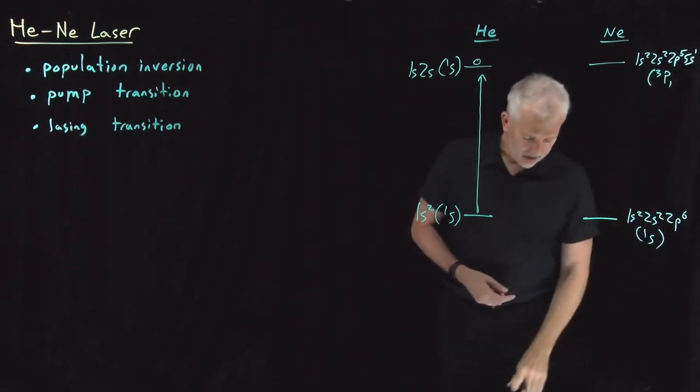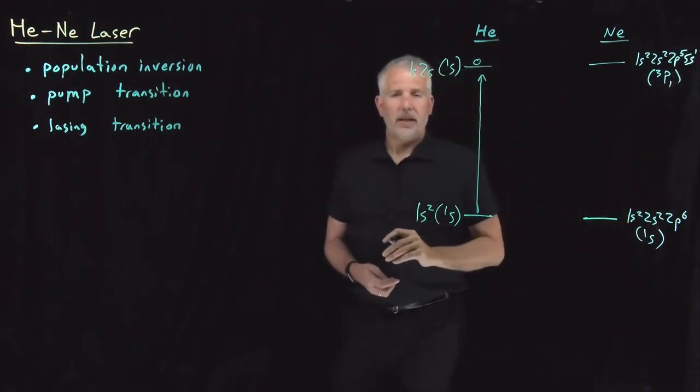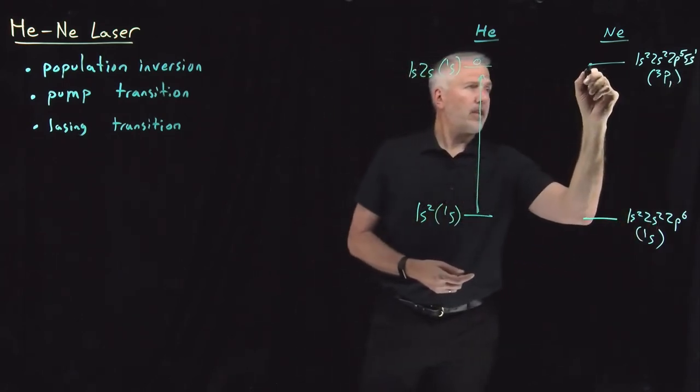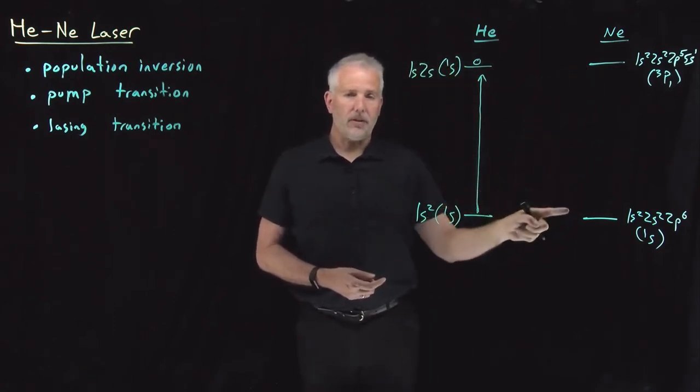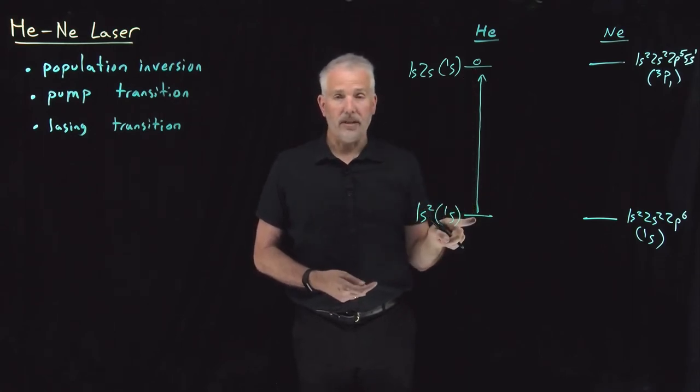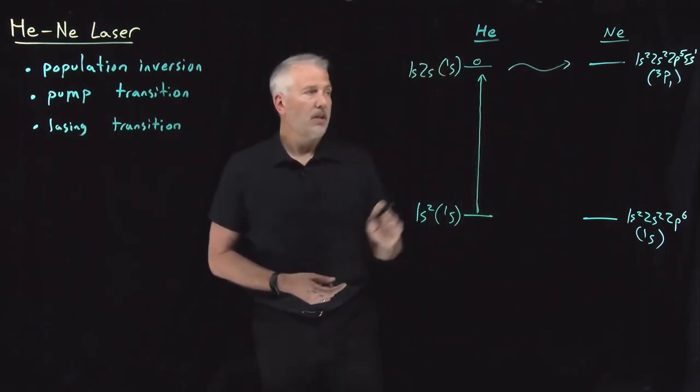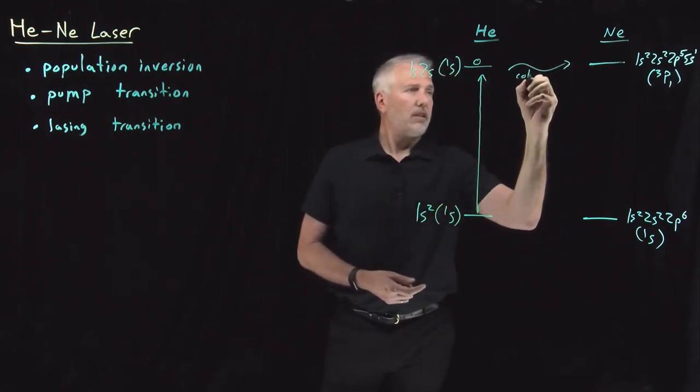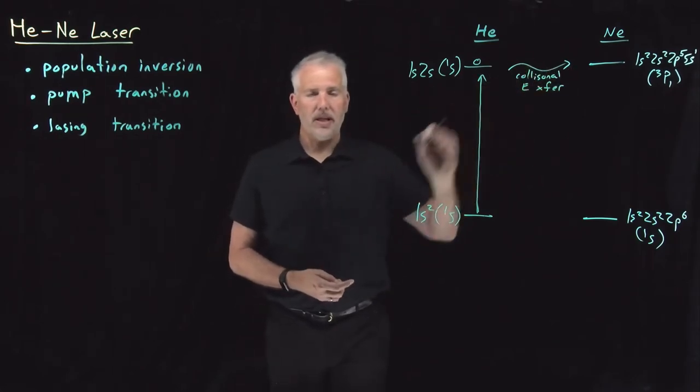The term symbol for that state is a triplet P state, triplet P1. And like I said, just coincidentally, this energy level for neon is about as far above the ground state as the 1s2s state in the helium is above its own ground state. So what that means is this pair of states is convenient to use to transfer energy from the helium to the neon.